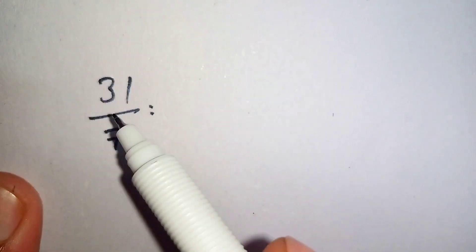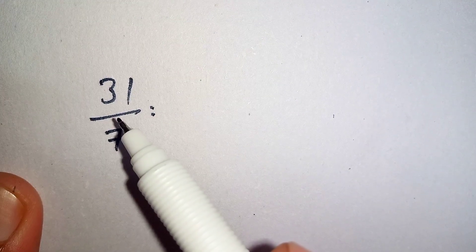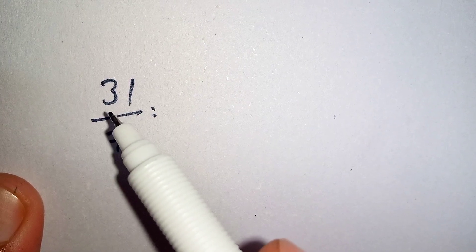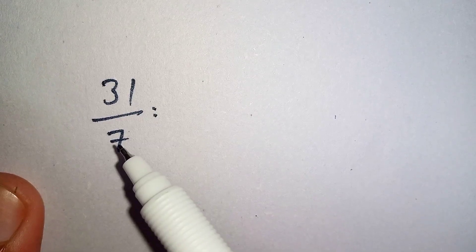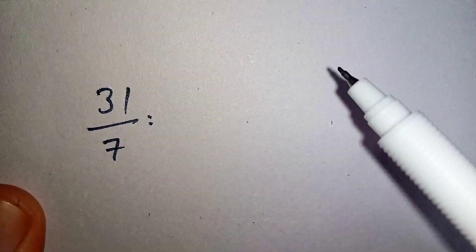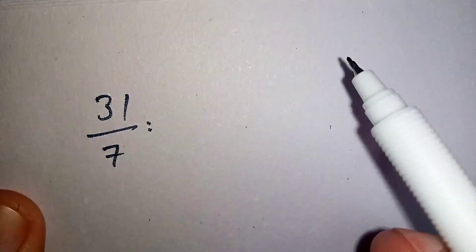Here is another example in which we convert the improper fraction 31 over 7 into a mixed number. We will again divide 31 by 7.